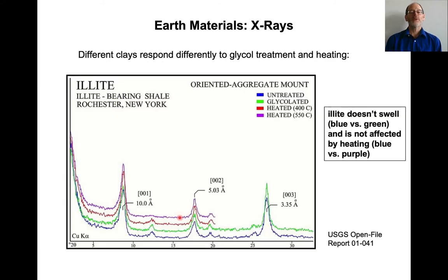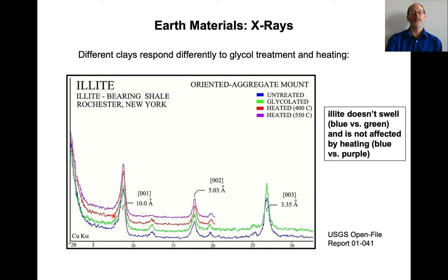The way you go about this is to measure the spectrum for end-member clays. This is illite — a clay that doesn't swell. Looking at the blue and green curves, all the peaks are in the same position, so it's not a swelling clay. If you add ethylene glycol and a peak doesn't move, it could be illite — that's a characteristic of illite. It's also not affected by heating at 400 or 550 degrees — the peaks are not moving, just losing a little intensity.